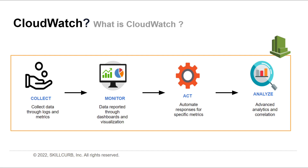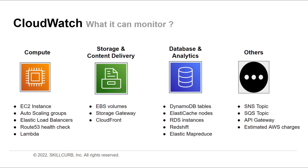Let's move on to see what services can be monitored using CloudWatch. Here is a bit more detail on the services within each category that CloudWatch can monitor. When talking about compute services, one can monitor the EC2 instances, the auto-scaling group details, elastic load balancers, health checks for Route 53, and Lambda functions as well.